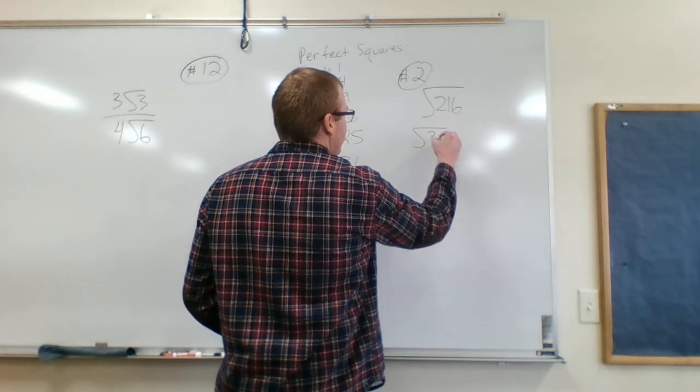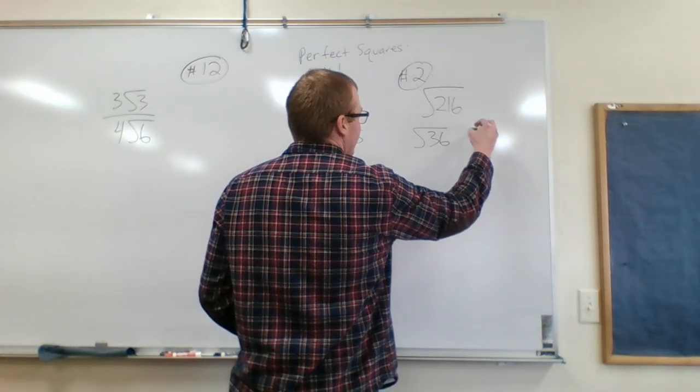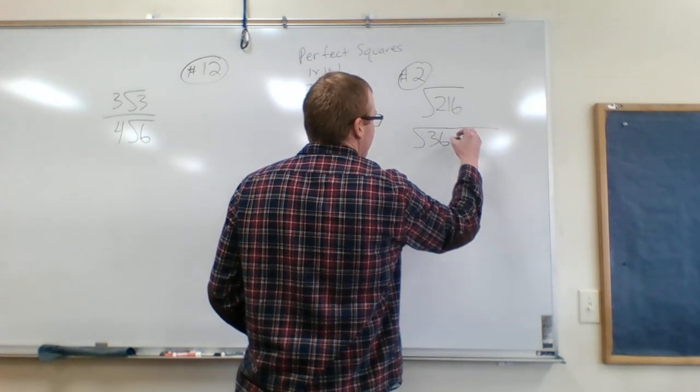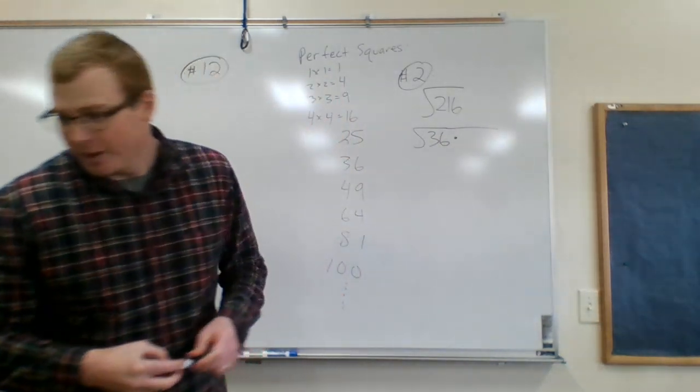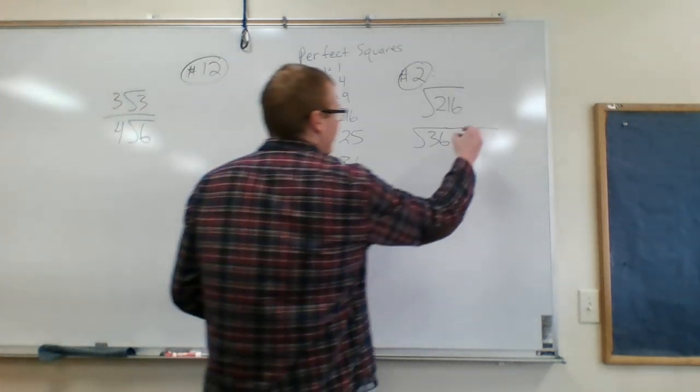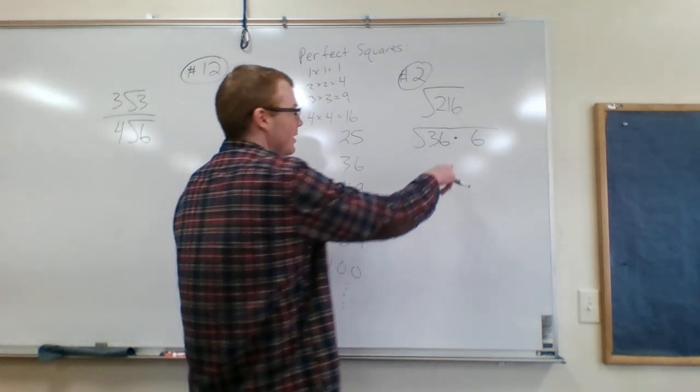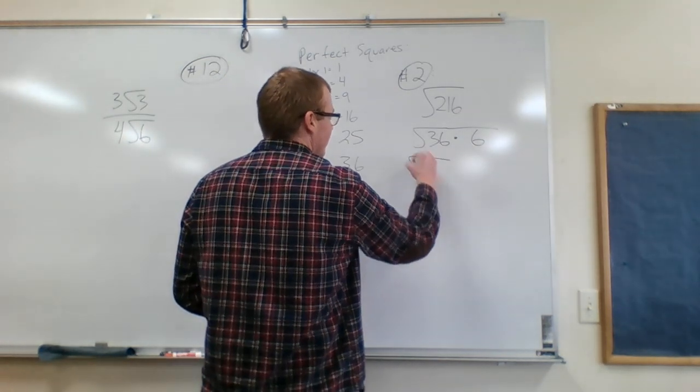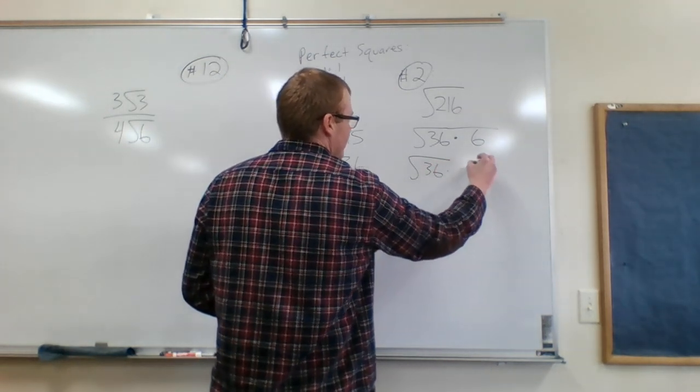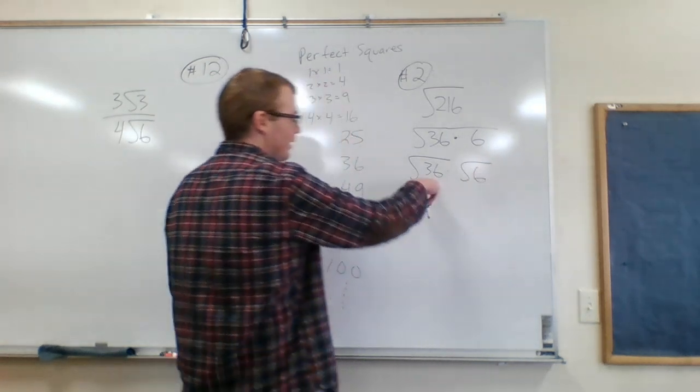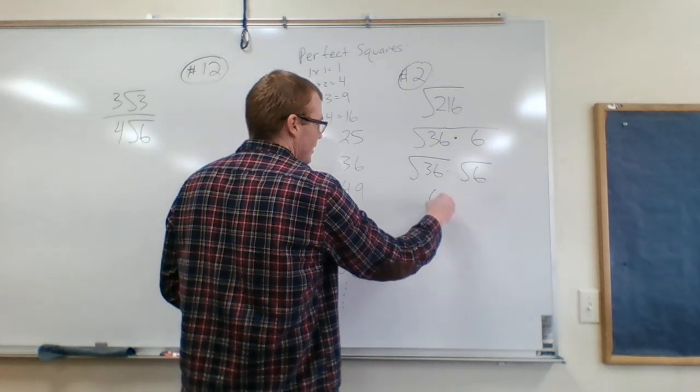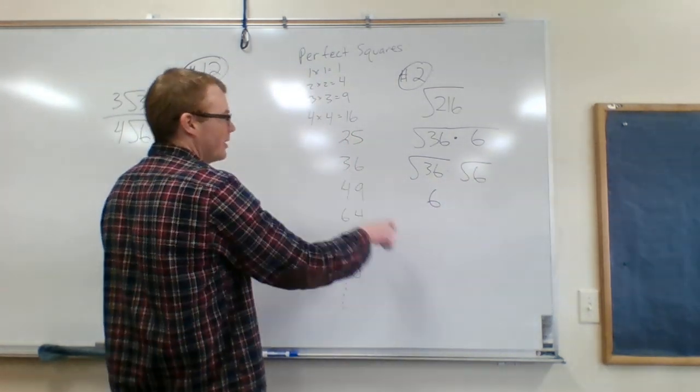So if you divide 216 divided by 36 you get, what is it, 6 I think. Yep, 6. So that can break down square root of 36 times 6, which is the same thing as this. Square root of 36 is equal to 6, so a perfect square.